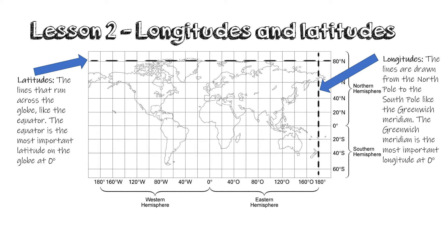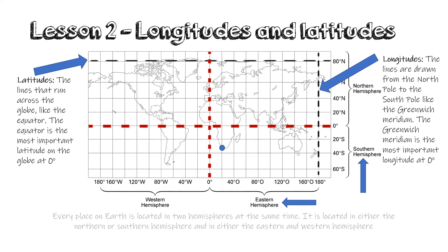Let's say that we are looking to see where South Africa falls. The first thing we need to do is find the equator and the Greenwich Meridian. Remember that the latitude for the equator is at zero degrees and the longitude for the Greenwich Meridian is also zero degrees running from the North Pole to the South Pole. If we look at South Africa, you can clearly see that it is part of the Southern Hemisphere as well as the Eastern Hemisphere. Every single place on Earth is located in two hemispheres at the same time — either the Northern or Southern Hemisphere and either the Eastern or Western Hemisphere. South Africa is located in the Southern Hemisphere because it is south of the equator, as well as in the Eastern Hemisphere because South Africa is east of the Greenwich Meridian.